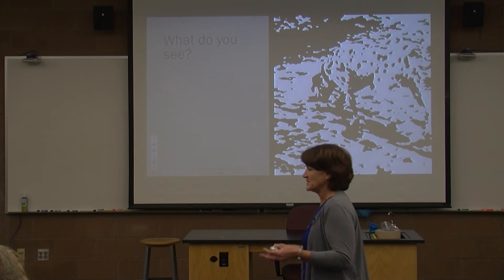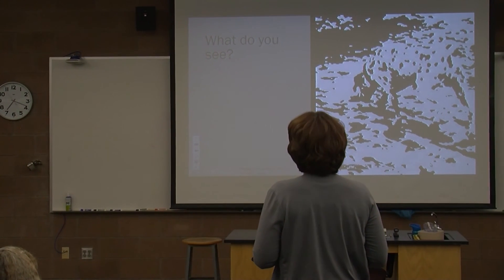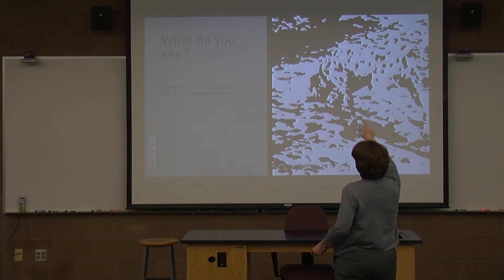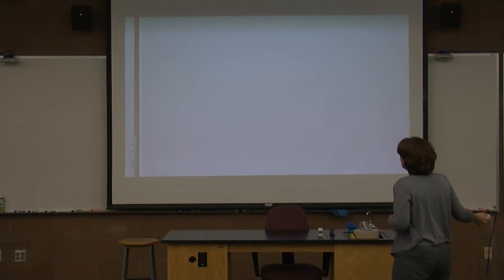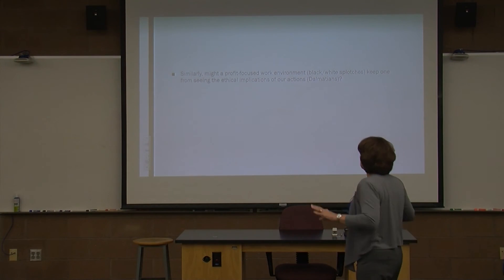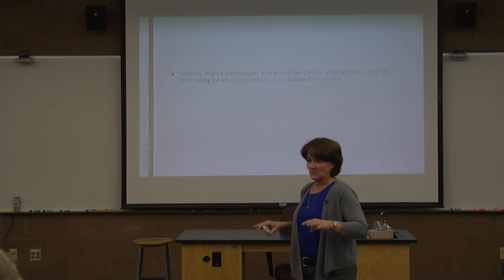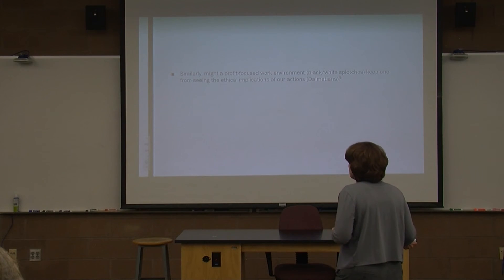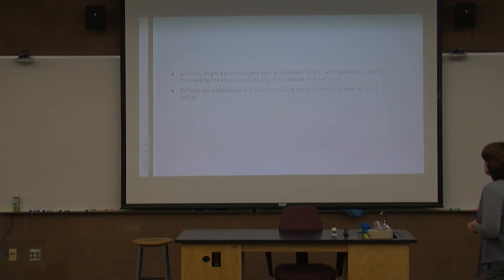What do you see here? So does the black and white background keep you from noticing the Dalmatian? Here's his head, here's his legs, his back, his tail. Sometimes, similarly, might a profit-focused work environment — like the black and white spots — keep one from seeing the ethical implications of our actions? If you're surrounded by pressures to perform, pressures to meet deadlines, pressures to meet sales quotas, we can sometimes get shadowed and not really see the forest for the trees. Perhaps our perception and decision-making are constrained in ways we didn't realize.